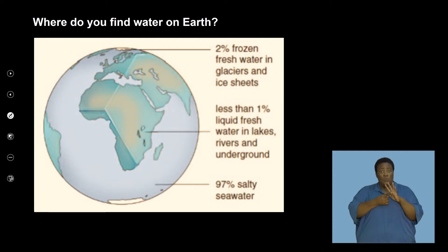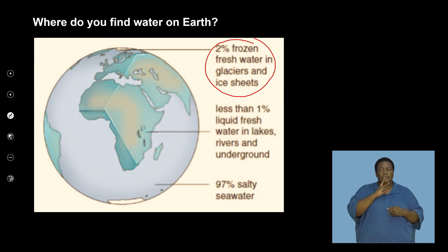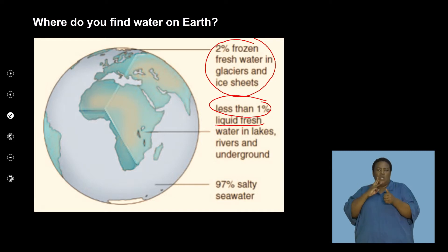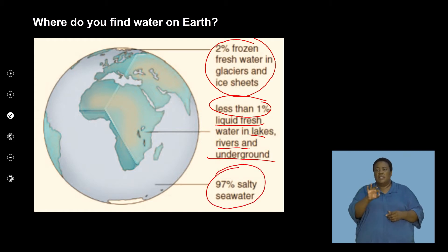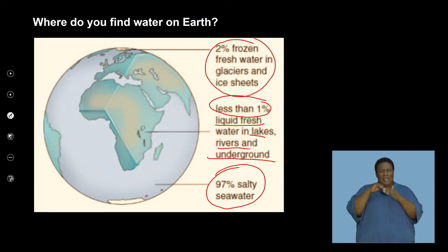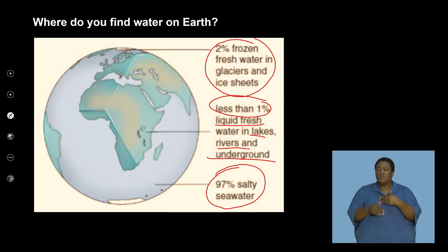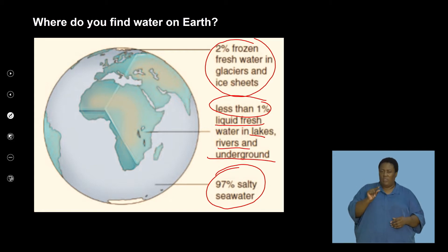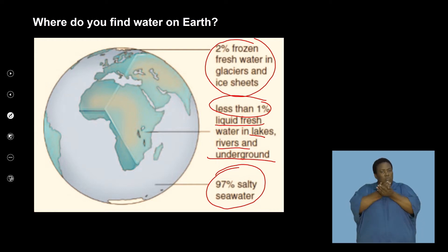About 2% of frozen water is in our glaciers and ice sheets, and we have less than 1% of liquid fresh water in our lakes, rivers, and underground sources. 97% is salty seawater. Of the less than 4% that is not ocean water, there is a mere 1% that we're able to process and consume as drinkable water — a significantly small amount, reminding us of the importance of water to human existence.